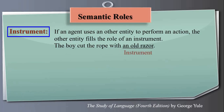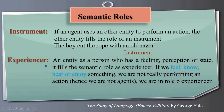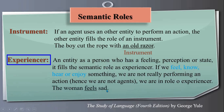Another semantic role is experiencer — an entity, usually a person, who has a feeling, perception, or state. If we feel, know, hear, or enjoy something, we are not really performing an action and hence we are not agents; we fill the role of experiencer. For example, in 'The woman felt sad,' the woman is experiencing sadness. Feelings like feel, know, hear, or enjoy indicate that the subject plays the semantic role of experiencer.